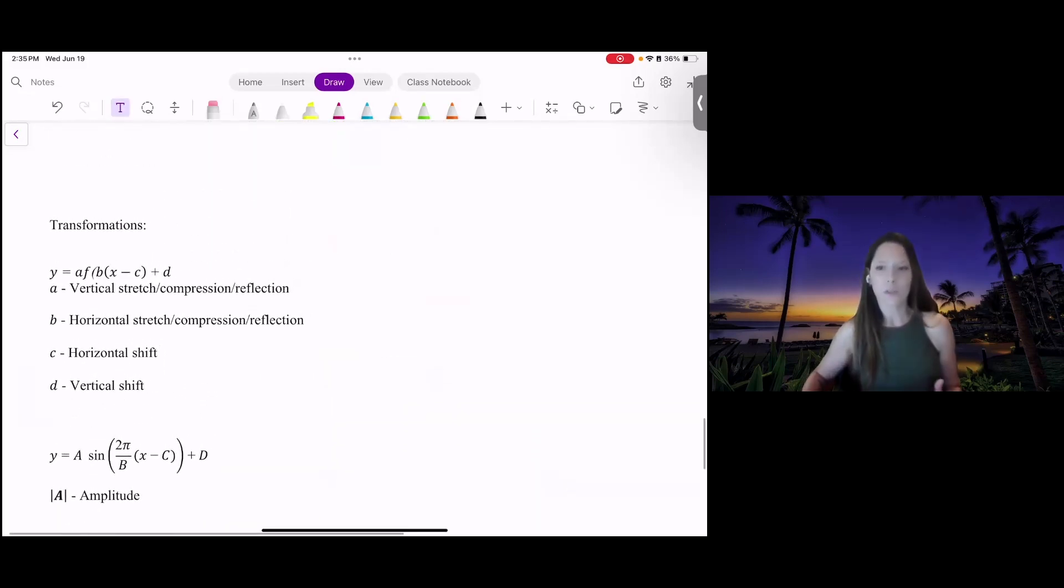If you recall our transformations from a previous video that I've done, we have inside and outside. Outside the function, we have a reflection that is vertical and a stretch or compress vertical. Inside the function, we have a reflection across horizontal and horizontal stretch or compress, and then we have shifting vertically and horizontally.